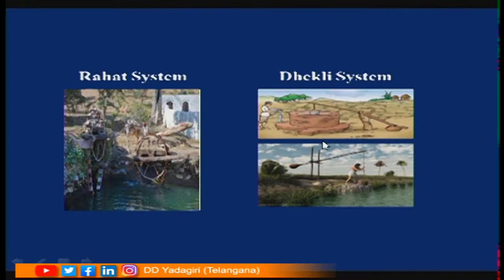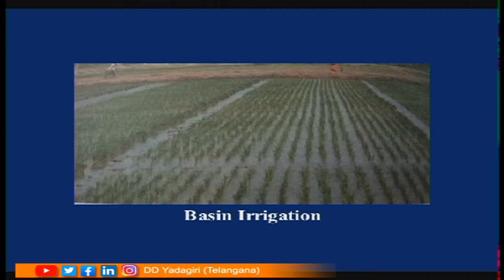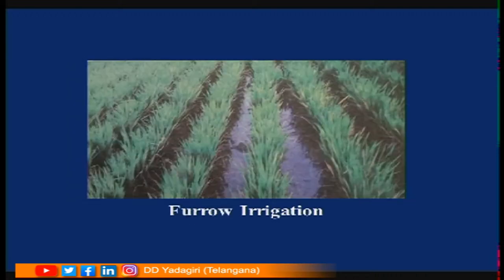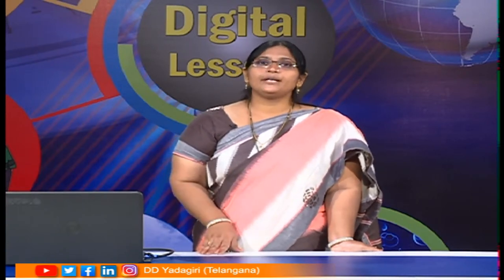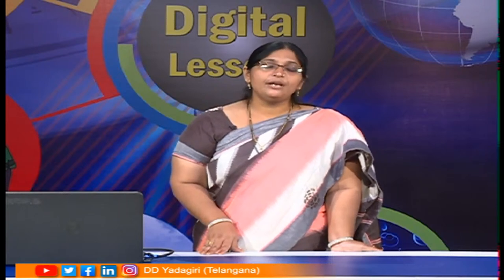These are the different methods used previously. Nowadays they use different systems such as furrow irrigation and basin irrigation. In basin irrigation, the entire field is submerged with water. In furrow irrigation, crops are present in particular rows with furrows in between, and water is poured into these furrows.